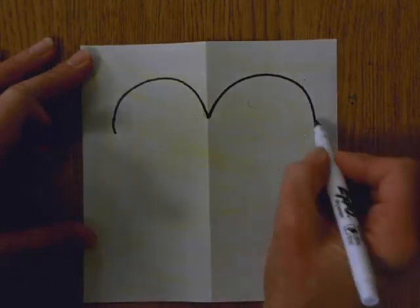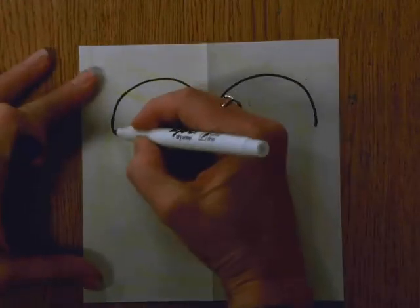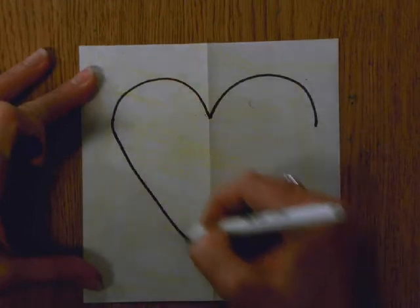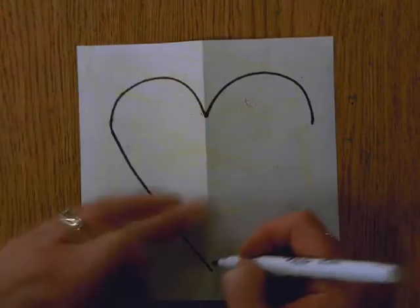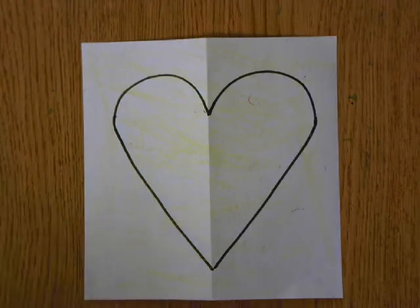And now that I have these two little rainbow lines, we're going to create a V shape to complete that heart. So I'm going to go down to the fold and then up to the other curving line. And there's my heart.